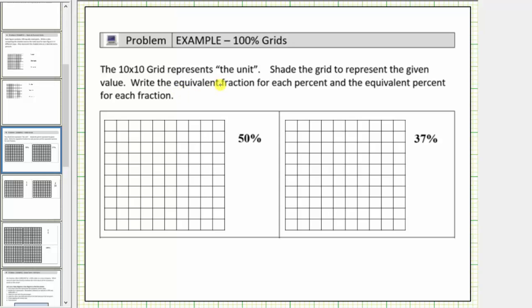The ten by ten grid represents the unit, or one whole. We're asked to shade the grid to represent the given value, write the equivalent fraction for each percent, and the equivalent percent for each fraction.